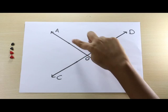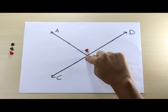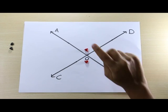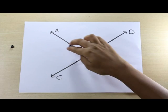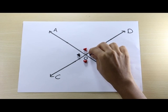This means that angle AOD and angle BOC are vertically opposite angles. Similarly, the horizontal angle AOC and angle BOD are also vertically opposite angles.